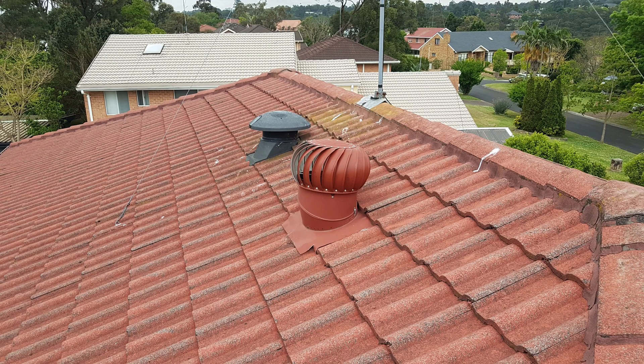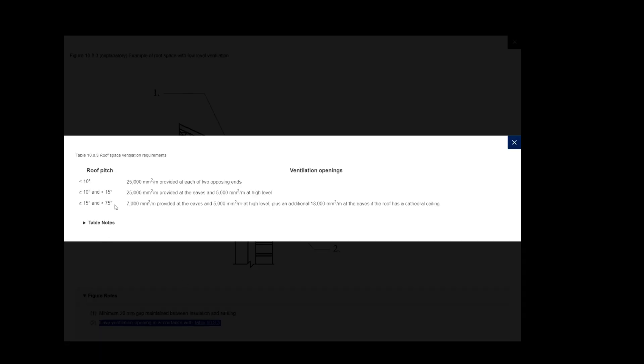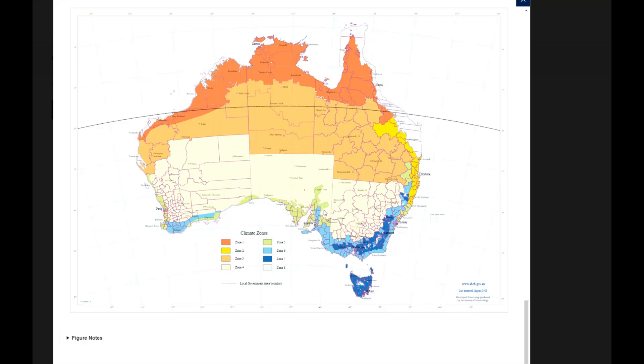We kicked off this series with a few videos about whirlybirds and ventilating the roof cavity, then we looked at the new national construction code requirements for roof ventilation. The thing about roof ventilation as far as the code is concerned is that it strictly only applies to climate zones 6, 7 and 8 in Australia — the cooler temperate areas. So a lot of what we spoke about strictly applied to only a small section of houses in Australia.